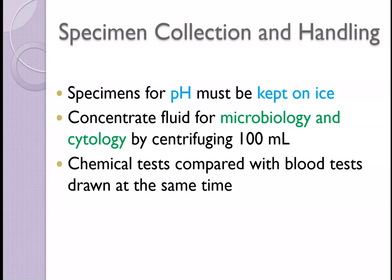If pH needs to be determined on the fluid, the specimen must be kept on ice — not in the refrigerator, but actually in a container with ice and a little water to maintain ice temperature. For microbiology and cytology, especially if it's 100 ml or more, we centrifuge and concentrate the fluid to increase the possibility of capturing small numbers of organisms.